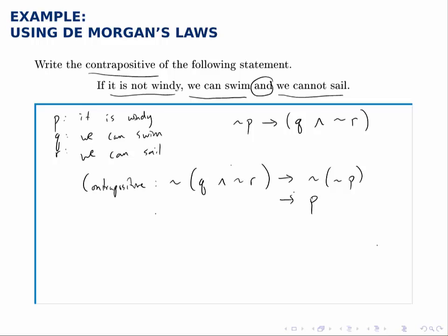But to negate this and statement is where we need to use De Morgan's laws. So to negate an and, we negate each piece and change and to or. And when we negate not r we just get r.